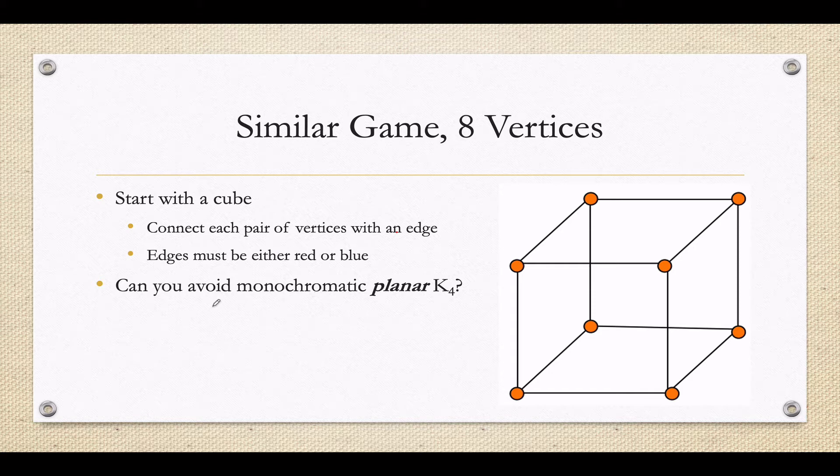And what the question is now is can we avoid a monochromatic planar K4? So first off, a reminder that K4, not K3, it's not the no triangle game, it's kind of squares with X's through them. And so what we're going to try to do is color in all these edges with either red or blue lines, but avoid one of these, but not just one of these, one of these that all lie on a plane.